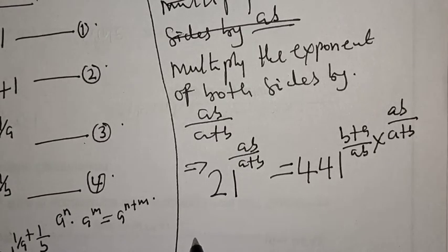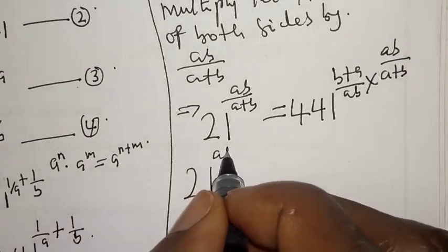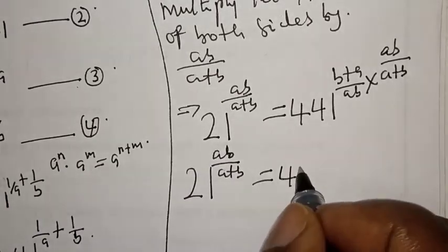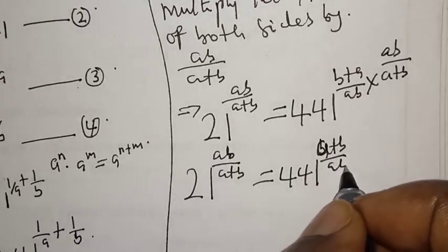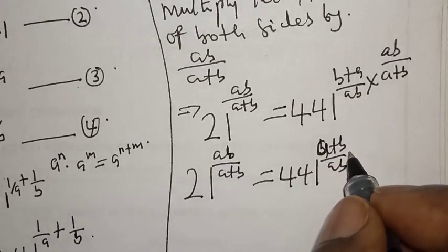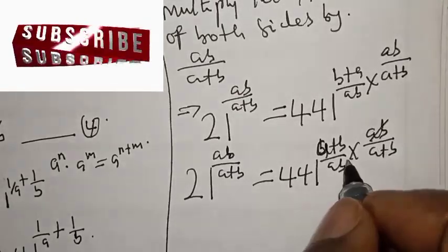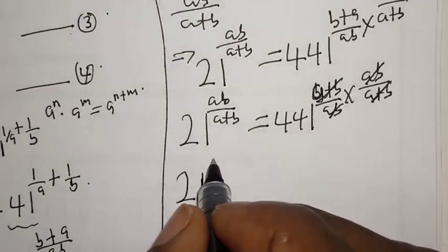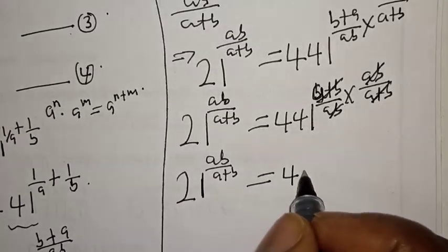This gives us 21 raised to power ab over a plus b equal to 441 raised to power b plus a over ab times ab over a plus b. Since b plus a over ab times ab over a plus b simplifies — these cancel — we are left with 21 raised to power ab over a plus b equals 441.